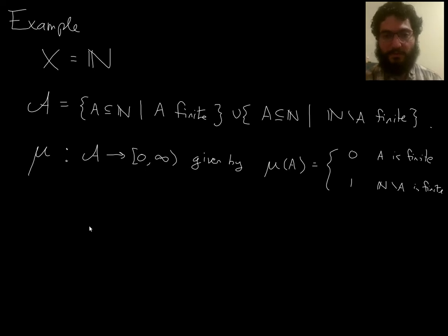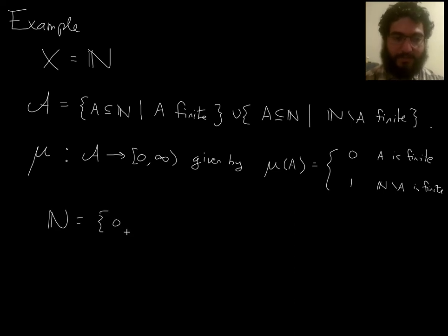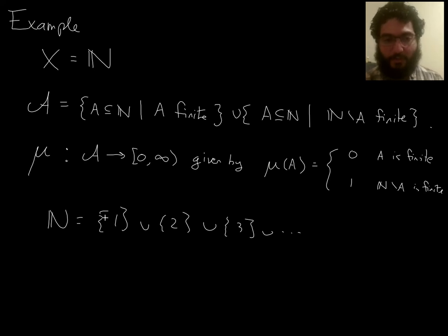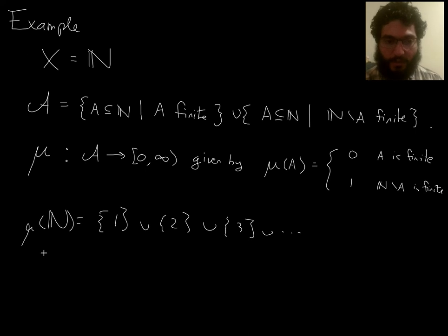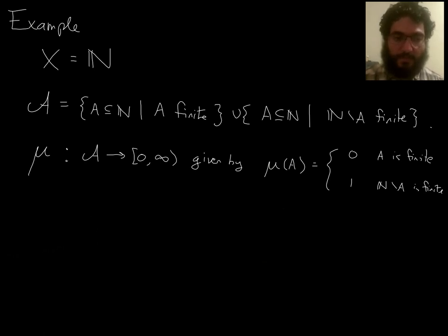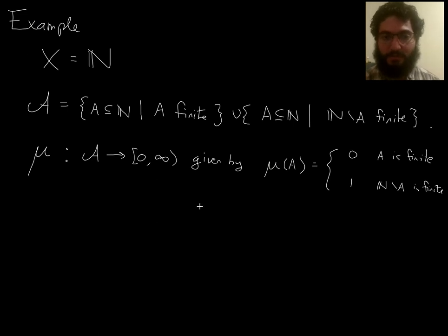Is mu countably additive? Well, the natural numbers themselves are a countable union of disjoint singleton sets. When you apply mu to any one of those singletons, you get 0. So the sum of all the mu's is an infinite series of zeros, which gives 0. On the other hand, mu of the union — mu of the set of all natural numbers — is 1, because it has empty complement, which is finite. So mu of the union is 1 while the sum of the mu's is 0. This is not countably additive, so mu is not a measure. This is a good non-example.